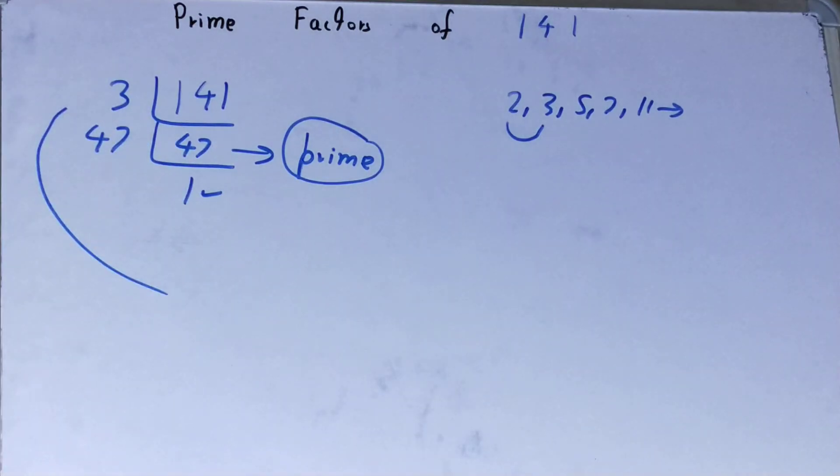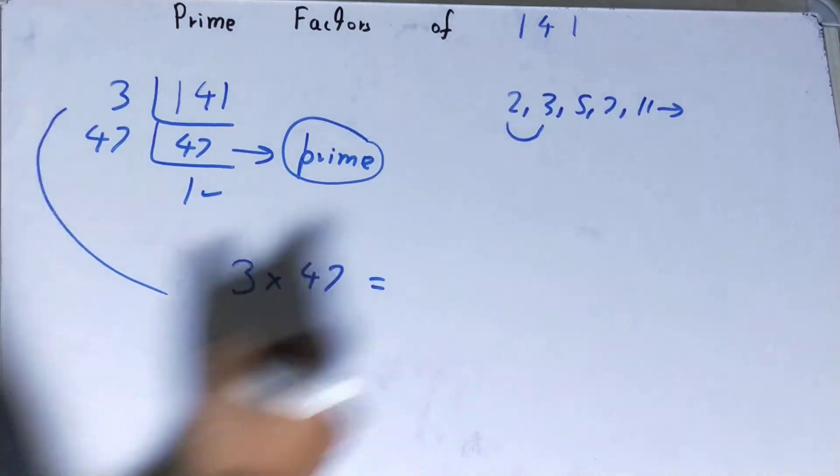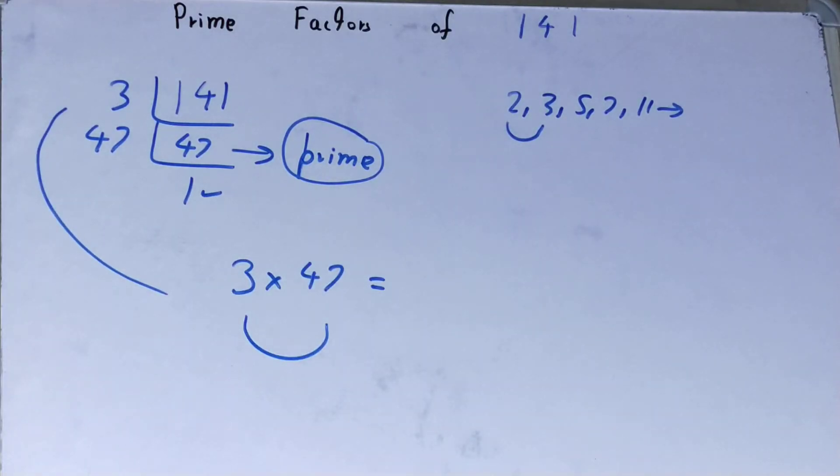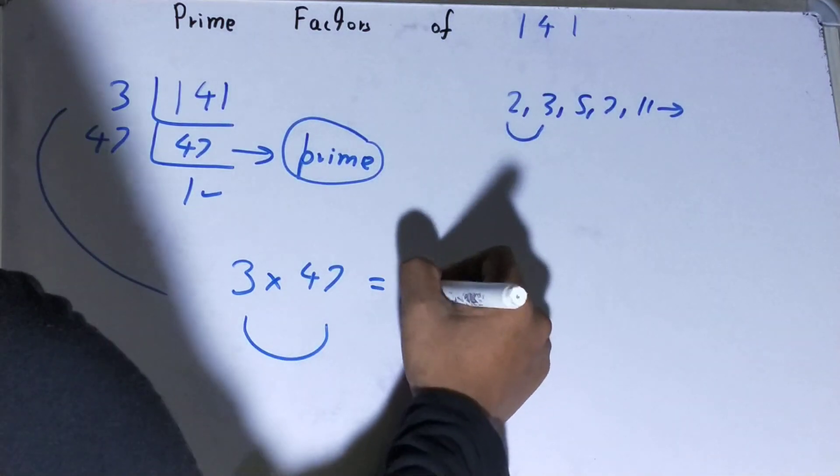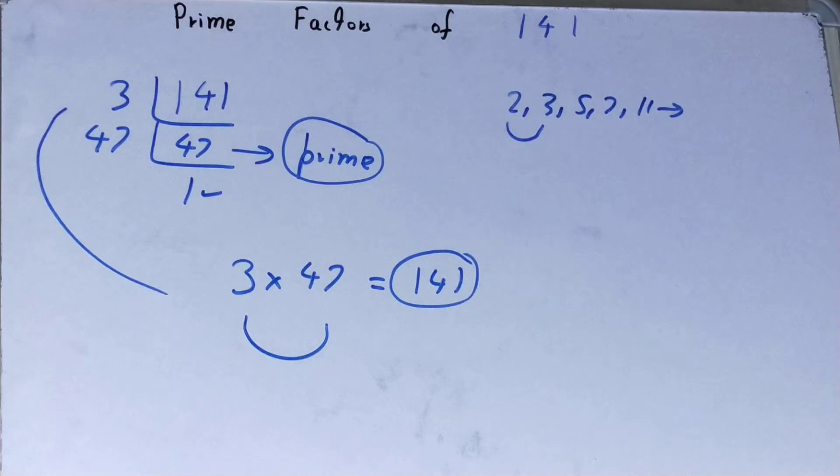That is 3 times 47. If you want to check whether it is right or not, you can multiply them. If you multiply them, you will have the number back again, that means your calculation is correct. If you don't get it, you need to recheck.